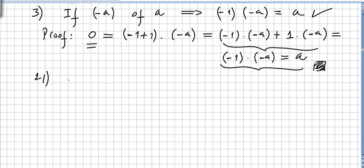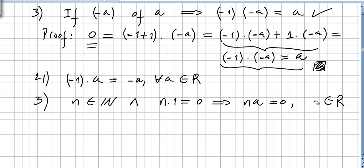So the fourth property is minus 1 times A is the same as minus A for all A in the ring. The fifth is, I'm not going to prove this, for all N in the natural numbers, and for N times 1, if N times 1 is equal to 0, then N A will be 0 for all A in the ring.